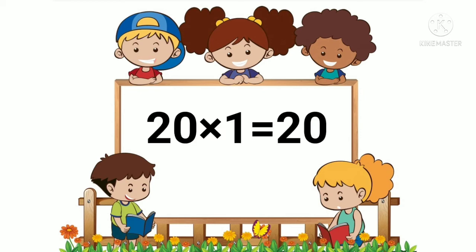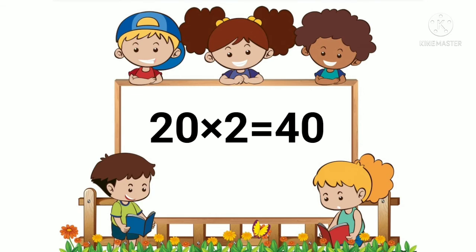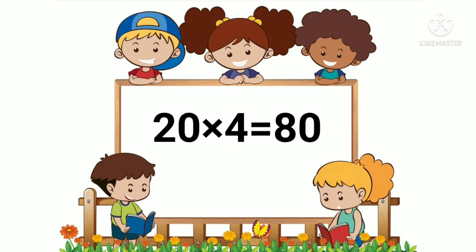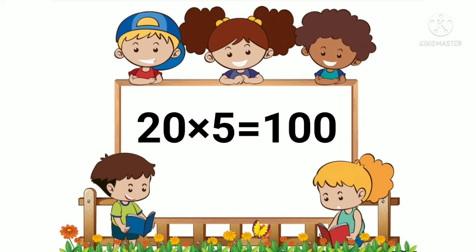21's are 20. 22's are 40. 23's are 60. 24's are 80. 25's are 100.